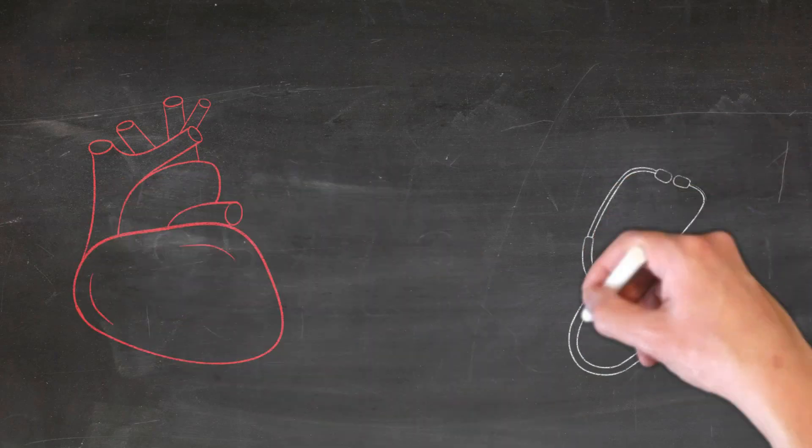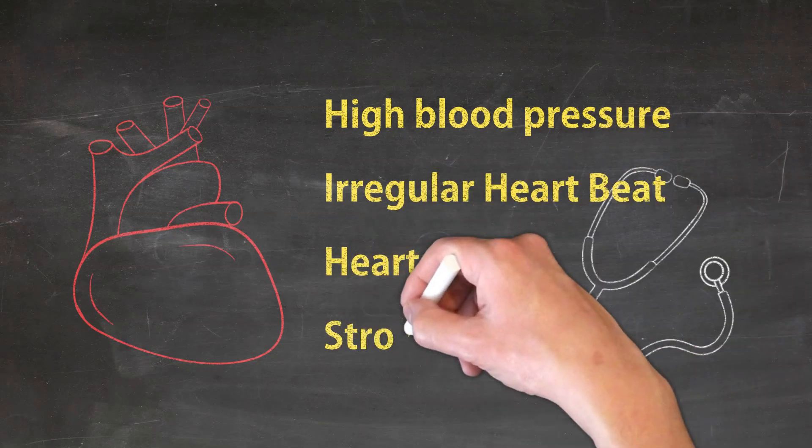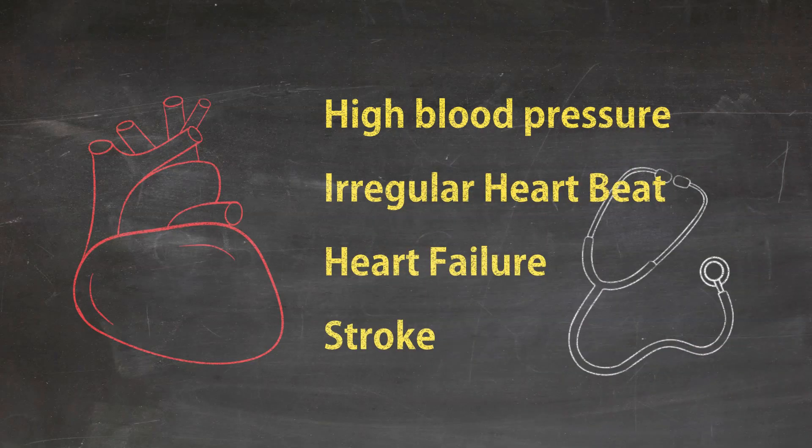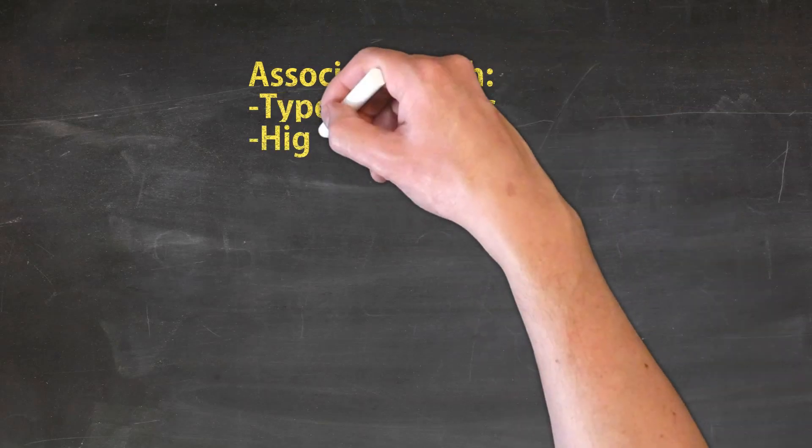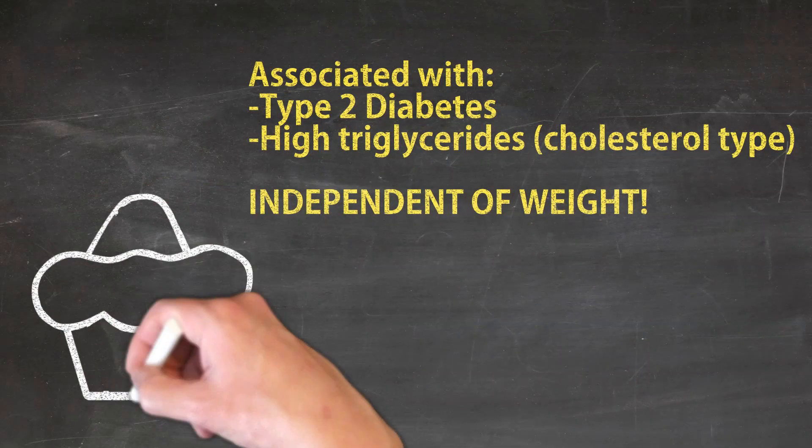It has been shown to be correlated to hypertension or high blood pressure, irregular heartbeat, heart failure, and stroke. There also has been seen an increased prevalence of type 2 diabetes and high triglycerides, a type of cholesterol.